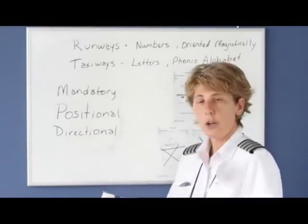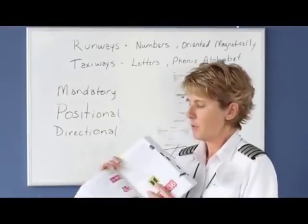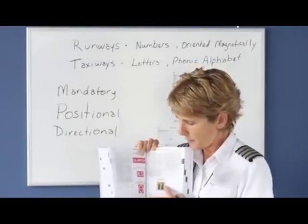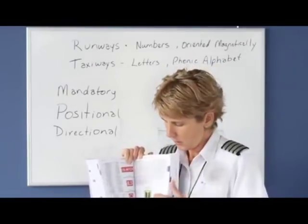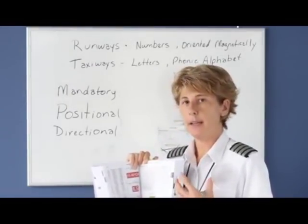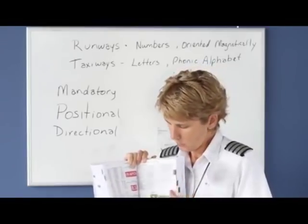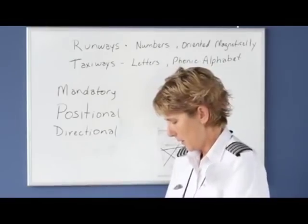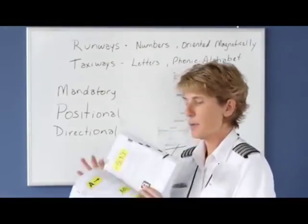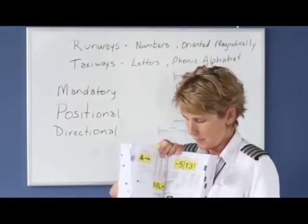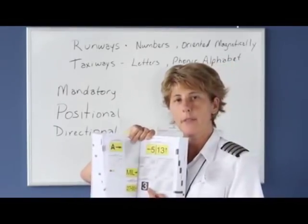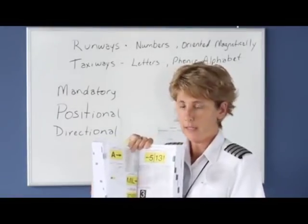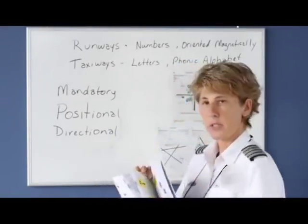Positional signs show your position on either the runway or the taxiway. Those are going to be the ones that have the black background with the yellow writing on them. The black background shows your position, and the taxiways are denoted by the phonetic alphabet. This one would be showing you that you are on taxiway tango. If you saw a black background sign on the runway, it may appear something like this, where you have the black background with a number on there. That denotes that you have 3,000 feet remaining on the runway.